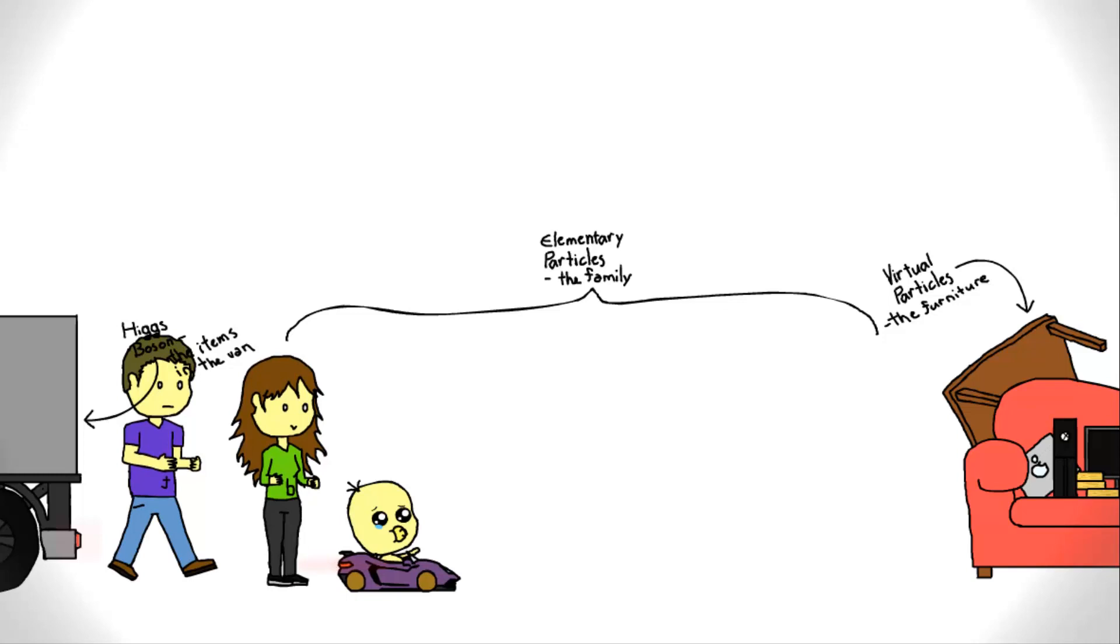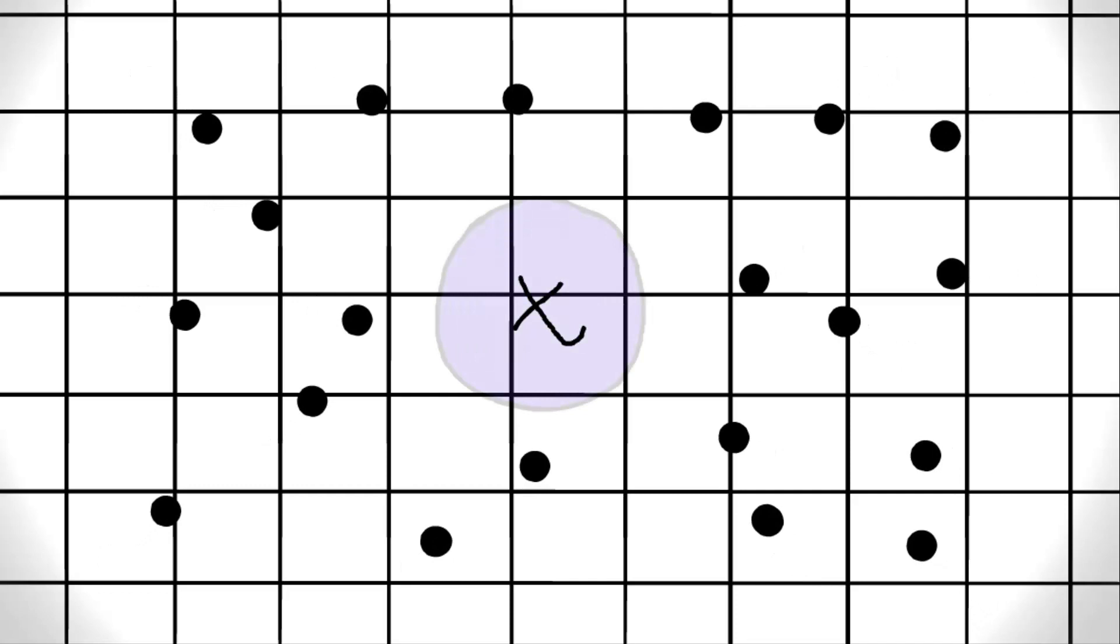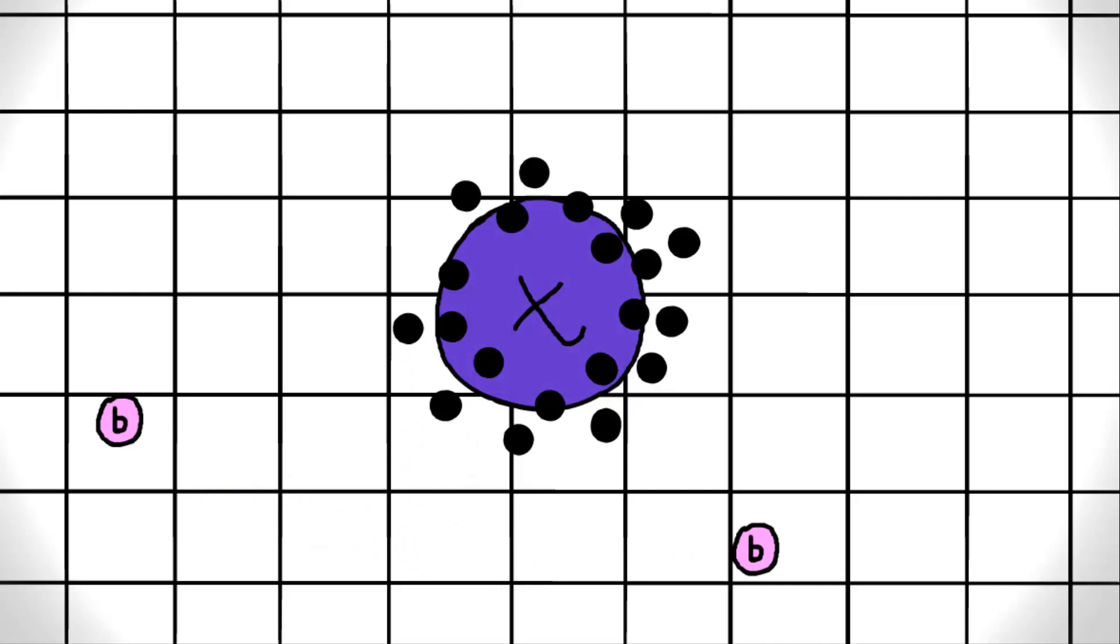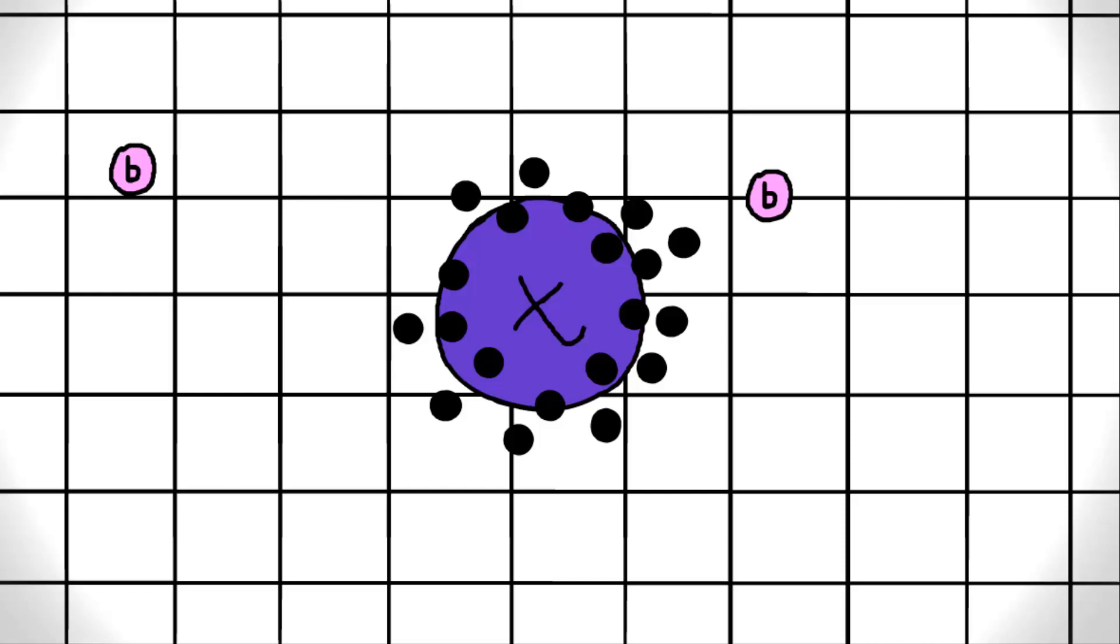Remember how we said bosons snapped in and out of existence? Well, the Higgs boson is no exception. Almost as soon as the virtual particles pile onto the elementary particle, the Higgs boson disappears and decays. This is why it is so hard to detect and why its discovery on July 4, 2012 at CERN is so momentous.